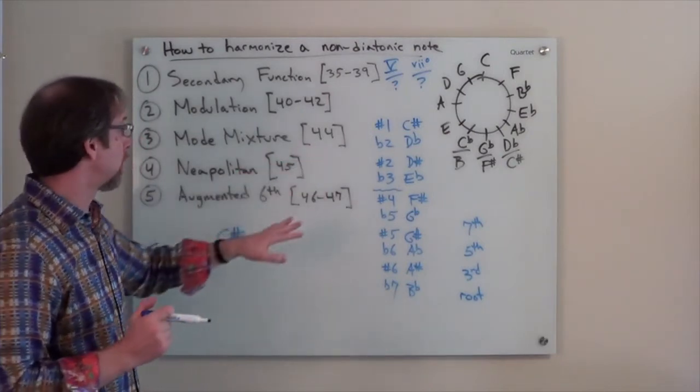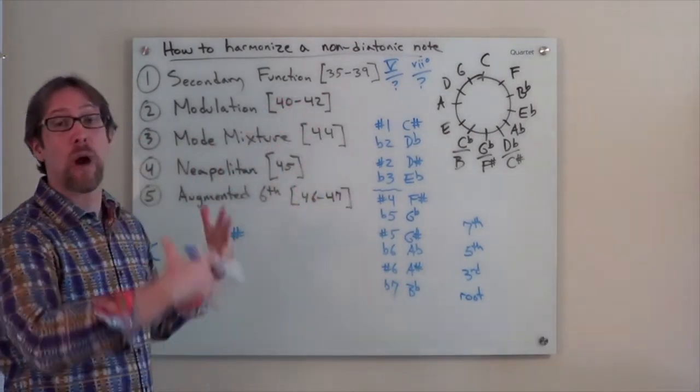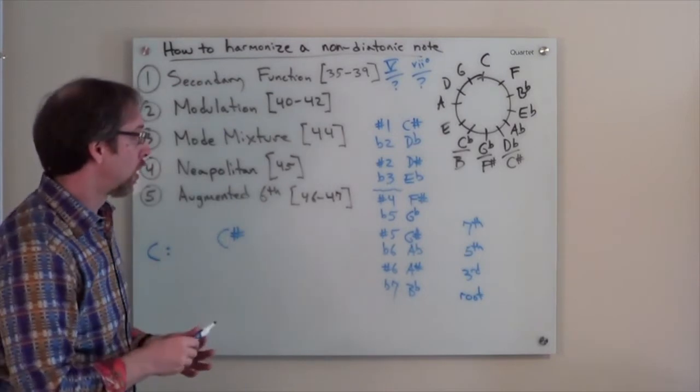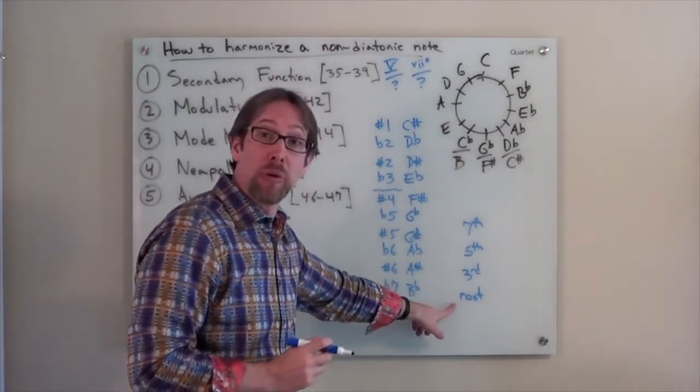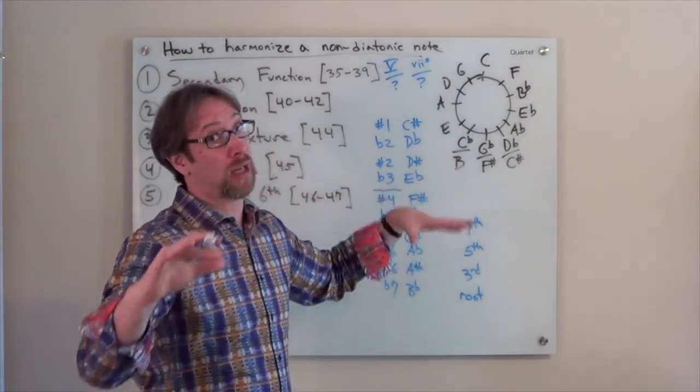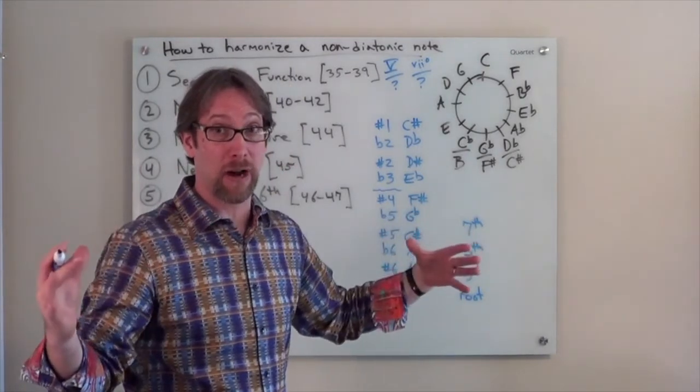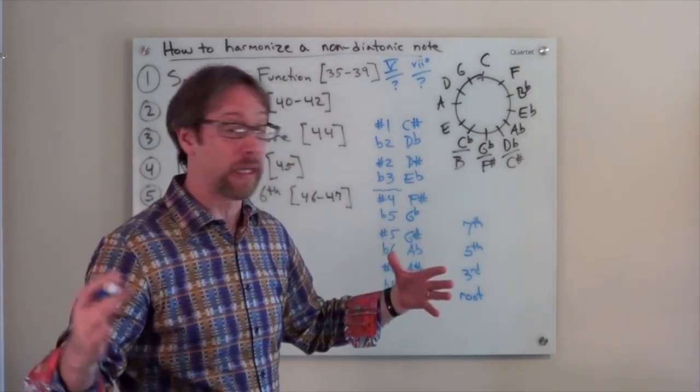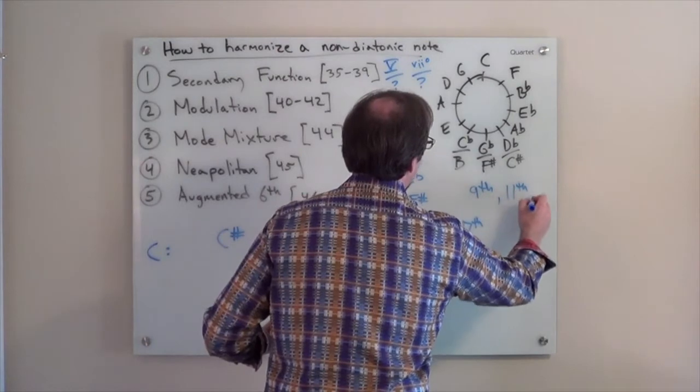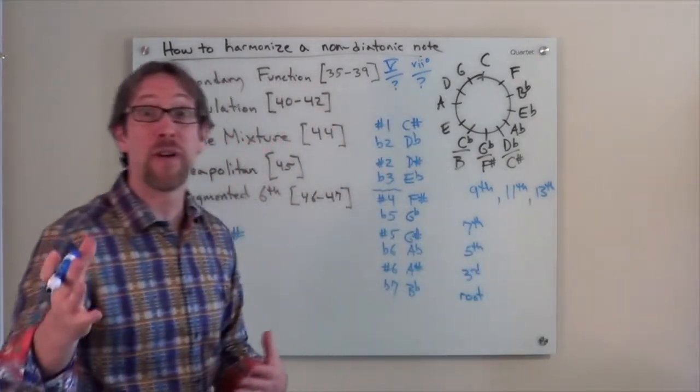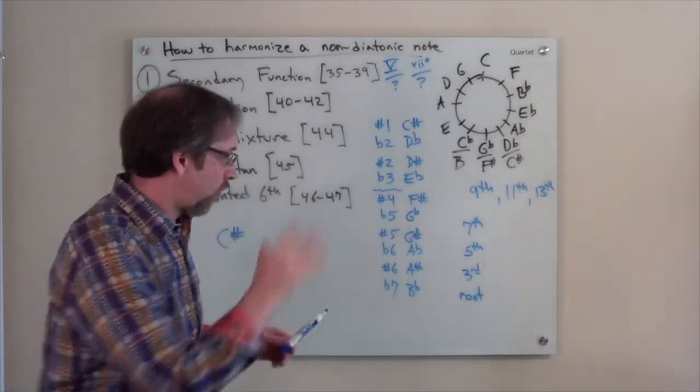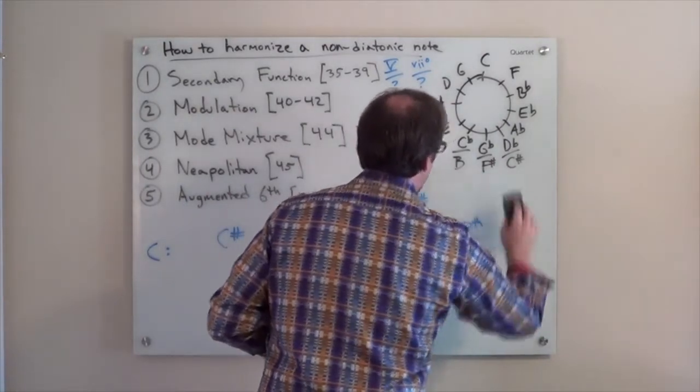So let's first start by thinking about it as a sharp one. You're writing a piece, you're harmonizing a melody in the key of C major, you have a C sharp in the melody, what do you do? Well, that C sharp can either be the root of a chord, the third, the fifth, or the seventh. We're going to limit ourselves because we don't want to go completely crazy right off the bat. Yes, you can harmonize things with ninth chords, eleventh chords, and thirteenth chords, and some of you have already asked me to talk about them, and I will do so, just not today. So for now, we're going to limit ourselves to root, third, fifth, or seventh.